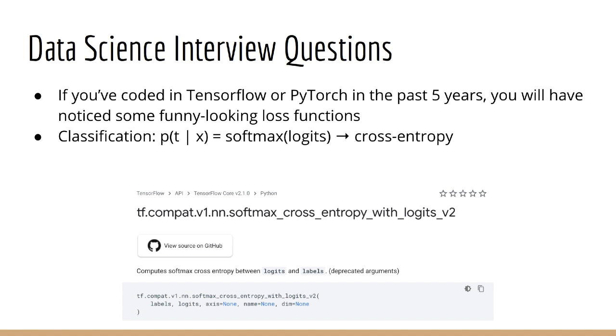Instead, with TensorFlow and PyTorch, we usually output what are called logits. Basically these are the values you get before applying the final activation such as a softmax or a sigmoid. Then you'll call these functions with ridiculously long names such as softmax_cross_entropy_with_logits_v2.